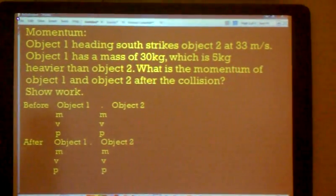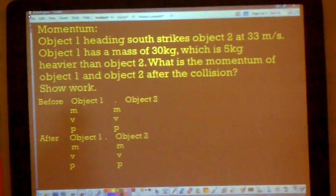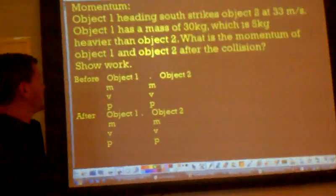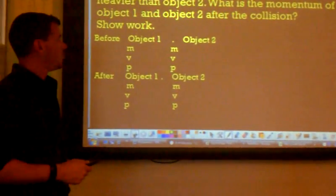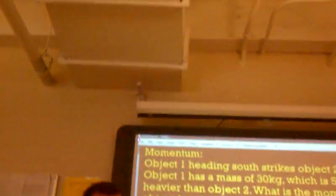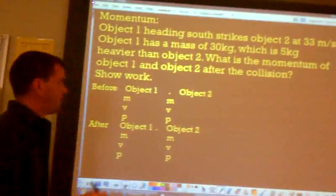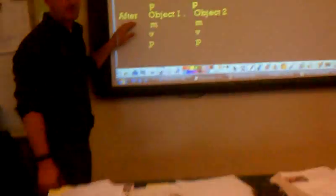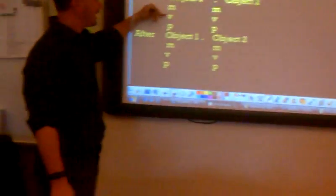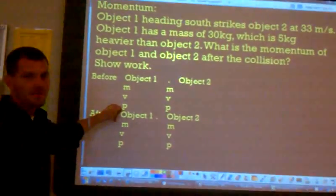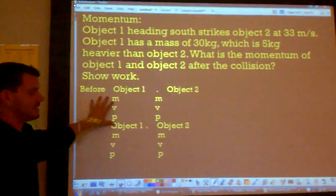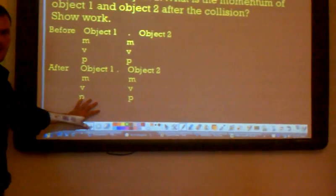So here's the problem. Object one, heading south, strikes object two at 33 meters per second. Object one has a mass of 30 kilograms, which is 5 kilograms heavier than object two. What is the momentum of object one and object two after the collision? The first thing I would do is write something down like this. This is before collision and this is after collision. You can write down your mass, velocity, and your momentum for each before and after. So we can see what we start with, and what kind of math we have to do to get what we end with.